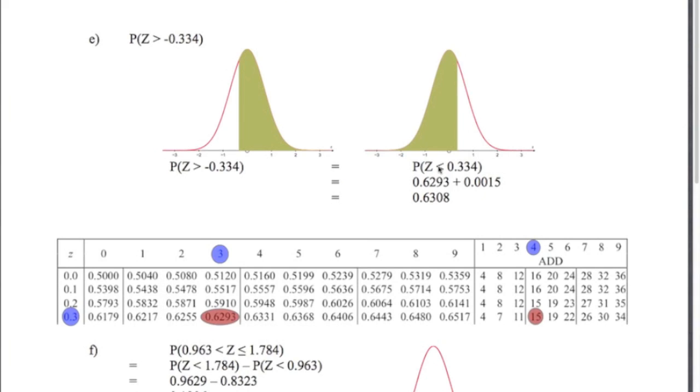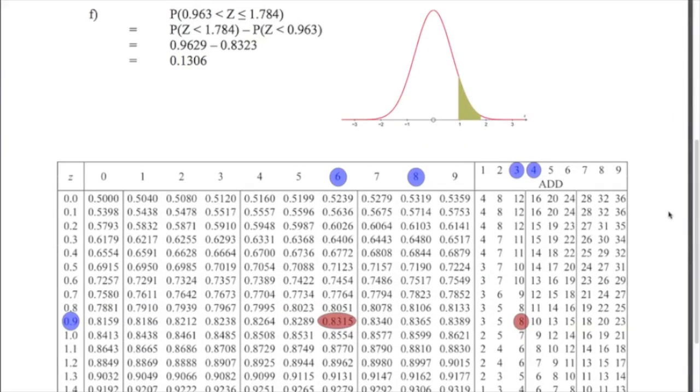Part E, probability of Z being greater than negative 0.334. You can clearly see from the diagram that this value is greater than 0.5. Also, we've got a negative Z value. So I have to rethink of this problem in terms of a positive Z value. So the equivalent area from being greater than negative 0.334 is being less than positive 0.334. Those two areas will be the exact same. So now I've transferred my problem so it's now in terms of positive Z values. So I'm going to look up 0.334 in the tables. 0.333 gives me this value. Looking up 4 for the last decimal place gives me 15. So I need to add 15 onto the last two decimal places here. 0.6293 plus 0.0015, which gives me 0.6308.